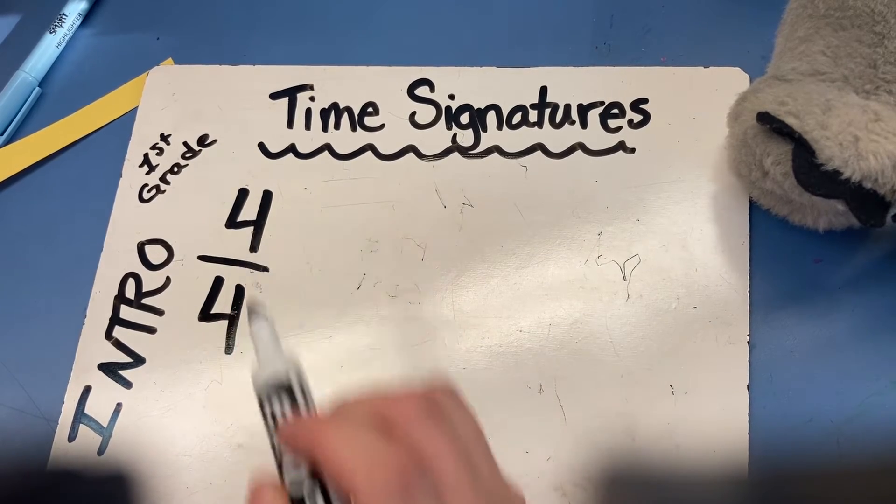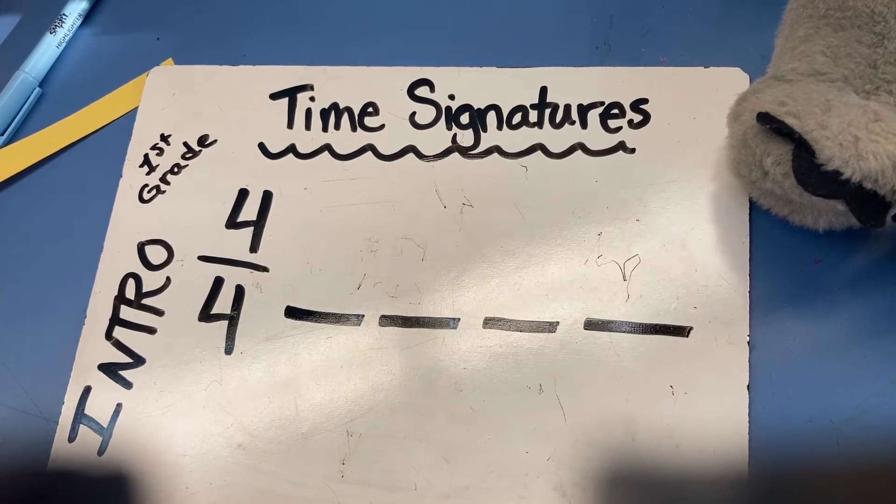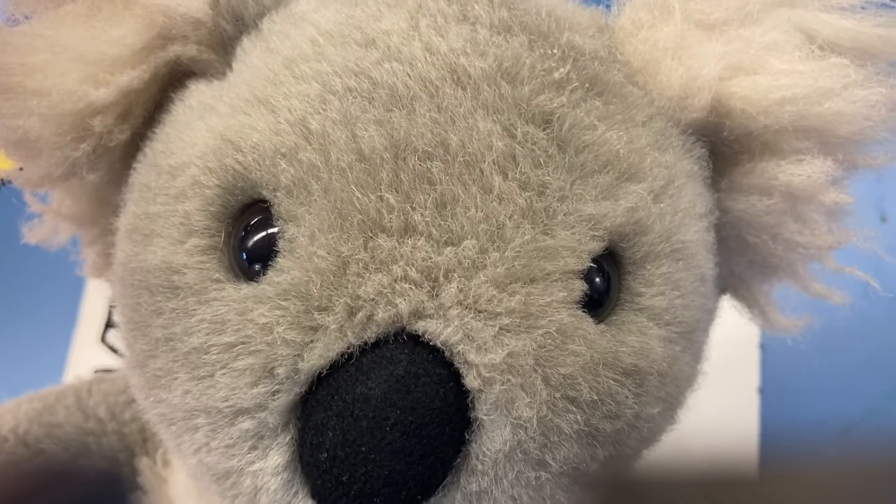We have 4 beats in the measure, so I'm going to put 4 lines. Let's see what rhythm Mr. Maestro is going to start out with, Mrs. Buffo's favorite rhythm. Are you ready?